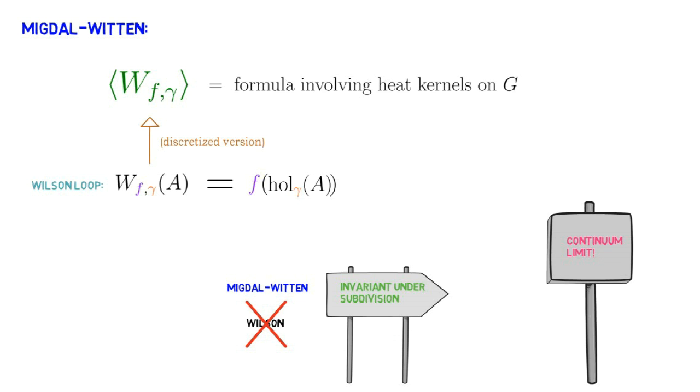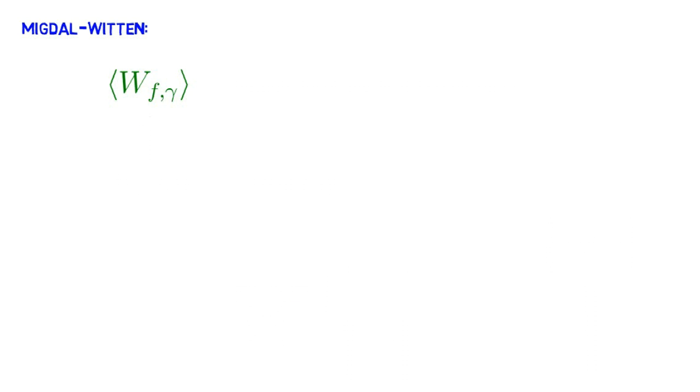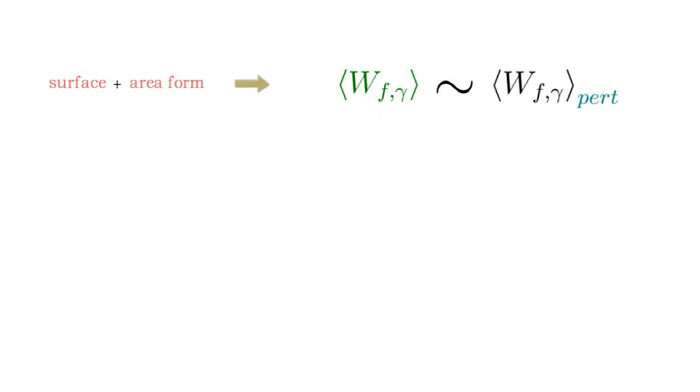Thus, the precise question my paper studies concerns whether for two-dimensional Yang-Mills theory, given a surface equipped with an area form, do perturbative Wilson loop expectations, given by a formal expansion in terms of Feynman diagrams, capture the asymptotics of the exact lattice Wilson loop expectations in the limit as the Yang-Mills coupling constant goes to zero.